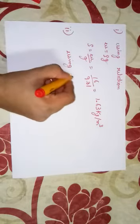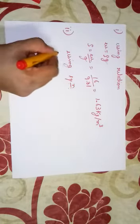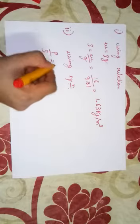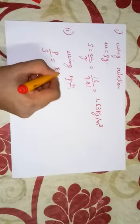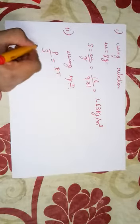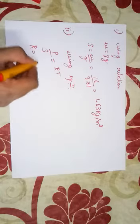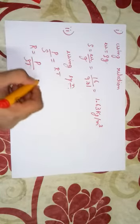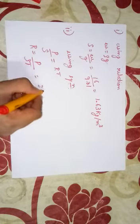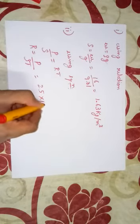Now using equation p by rho is equal to RT, R is equal to p by rho T. Substituting: 25 into 10 raised to 4